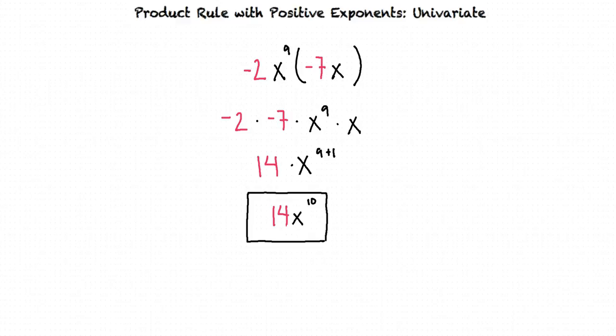Great job working toward the final answer. Okay, so to multiply two expressions that both have variables and exponents, we multiply the coefficients and then combine any exponential factors that have the same base. Exactly. It sounds like you really understand the product rule.